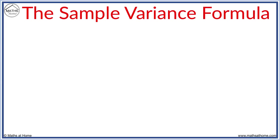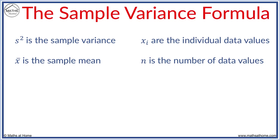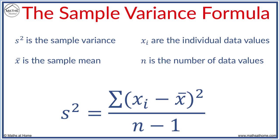The sample variance formula is given by s squared equals the sum of xi minus x bar all squared over n minus 1.